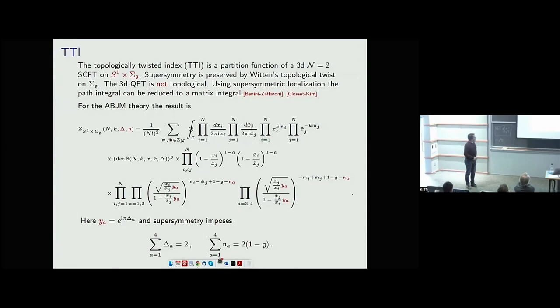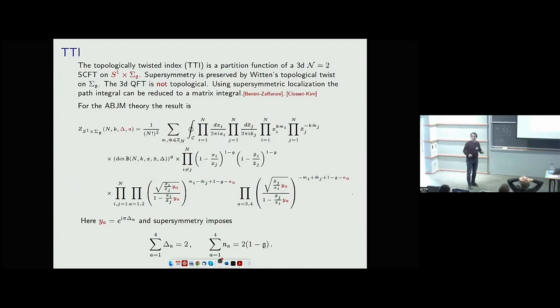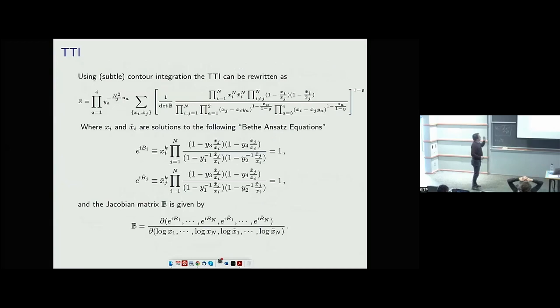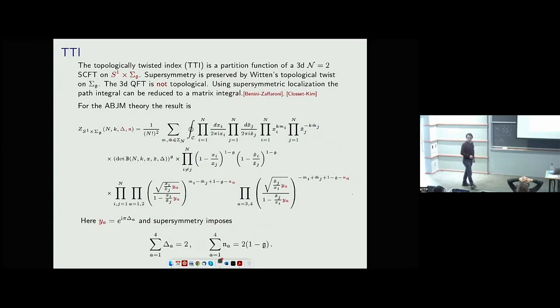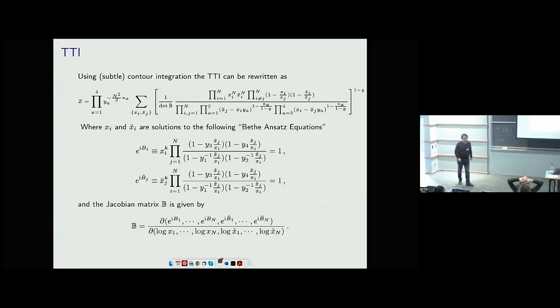I have to sum over the fluxes of the two gauge fields on the Riemann surface — so this is a sum and an integral — and I have two integrals because I have two vector multiplets. What I think is amazing is that you can rewrite this answer using a fancy version of the residue theorem as a sum over residues. This was done by Benini, Closset, and Zaffaroni, and the answer looks like this.